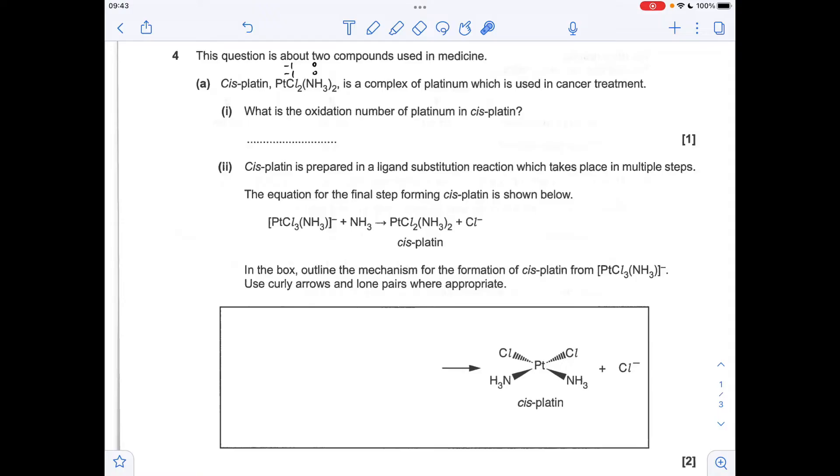Well if you think about the charges of the ligands, so you've got two neutral ammonia ligands, you've got two one minus chloride ligands so to keep the whole thing neutral this platinum needs to be in the plus two oxidation state.